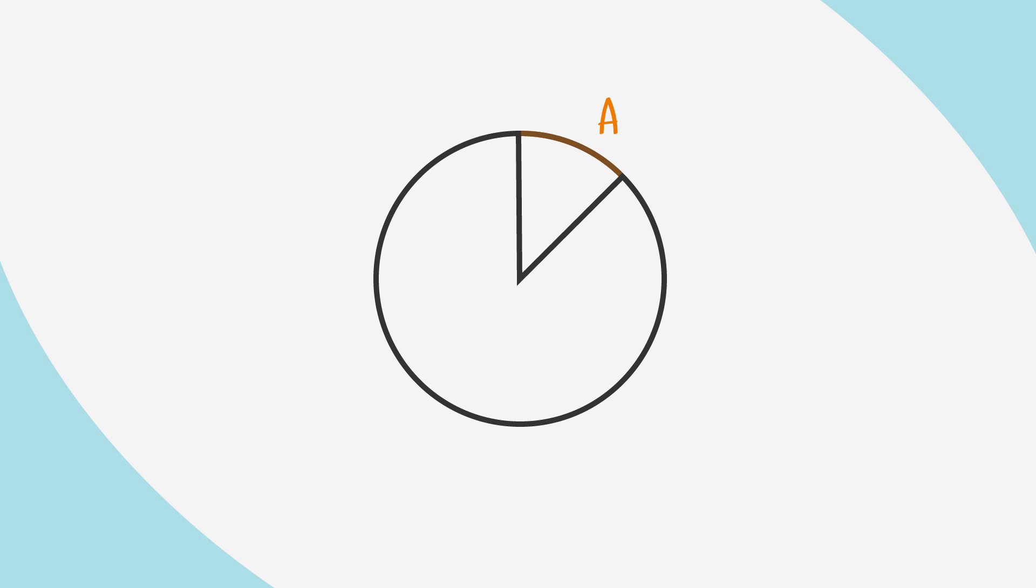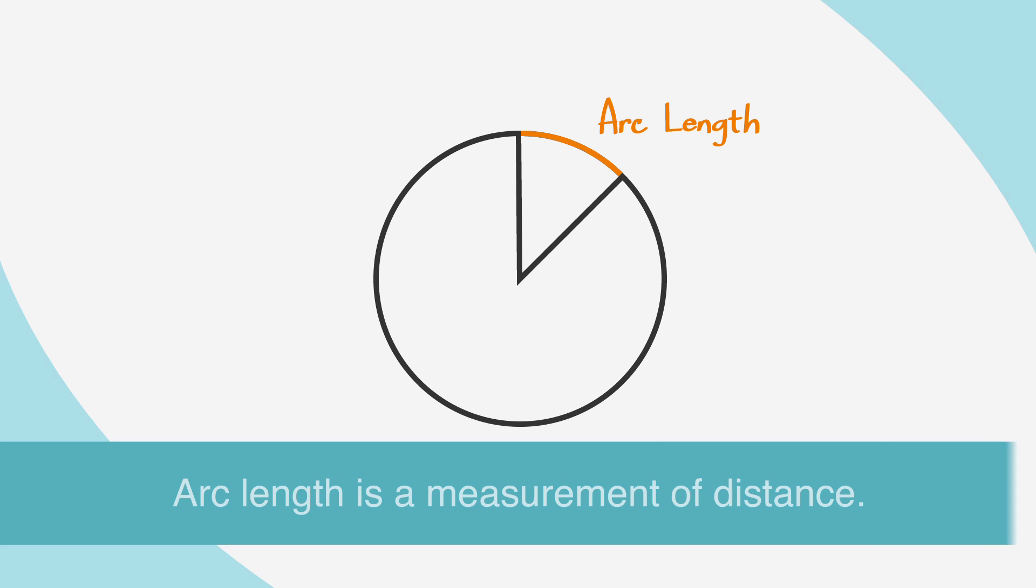The arc length is the measure of the distance along the curved line making up the arc of a circle. Like circumference, arc length is a measurement of distance, so it can be given in centimeters, inches, or even miles.